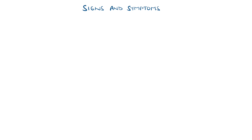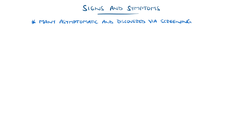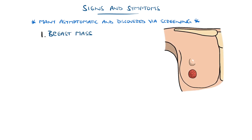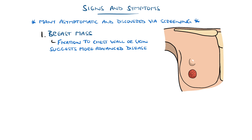Many patients are asymptomatic, and cancers are detected via screening such as mammography, showing calcifications or architectural distortions. Symptomatic presentations can include a breast mass, which is typically different to the surrounding tissue, and fixation to the chest wall or overlying skin suggests more advanced disease. An axillary mass may also be a presentation.